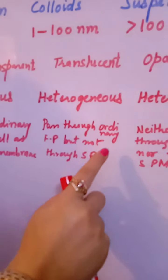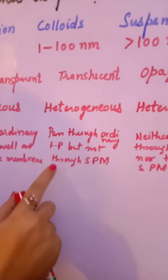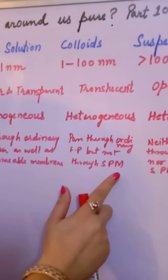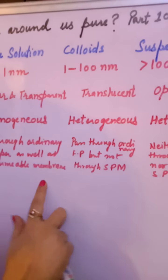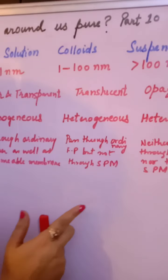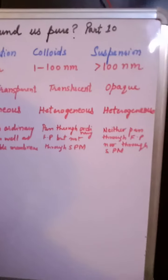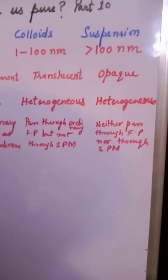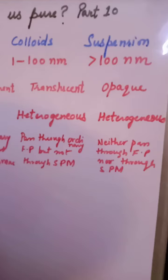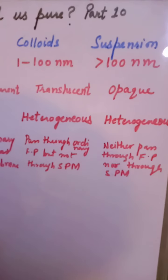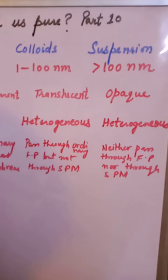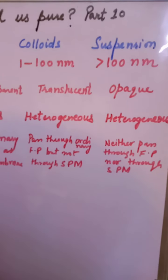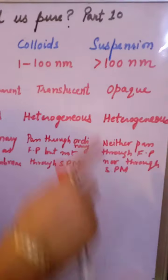Colloidal particles pass through ordinary filter paper but not through a semi-permeable membrane (SPM). So you can separate colloidal particles using a semi-permeable membrane — a pig's bladder in nature acts as a very good separating tool for colloidal particles.